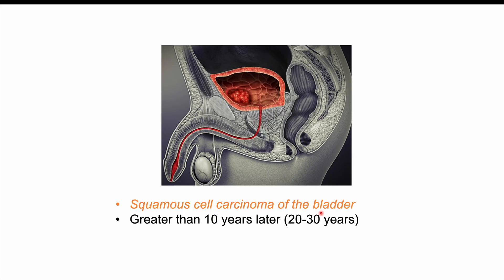If a patient has an infection, they can be asymptomatic or have symptoms they don't treat. Over time, having that chronic infection and chronic inflammation can increase the risk of squamous cell carcinoma of the bladder. It often takes at least 10 years — frequently 20 to 30 years. Children who become infected and remain untreated for decades are particularly at risk. Having other risk factors — such as smoking, which is a major risk factor for bladder cancer — adds even more risk on top of the inflammation already caused by the parasite.